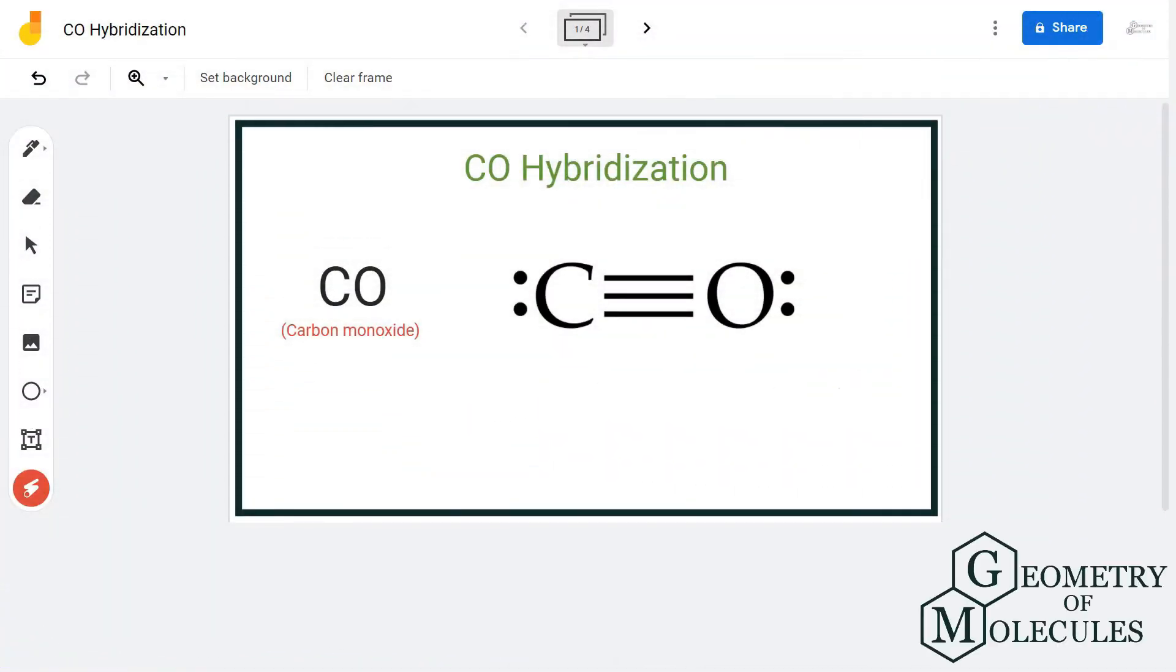Hi guys, today in this video we are going to look at the hybridization for the CO molecule, the chemical formula for carbon monoxide. To determine this hybridization, we are first going to look at its Lewis structure and then check its steric number. Here is the Lewis structure of carbon monoxide, in which carbon is forming three bonds with oxygen.